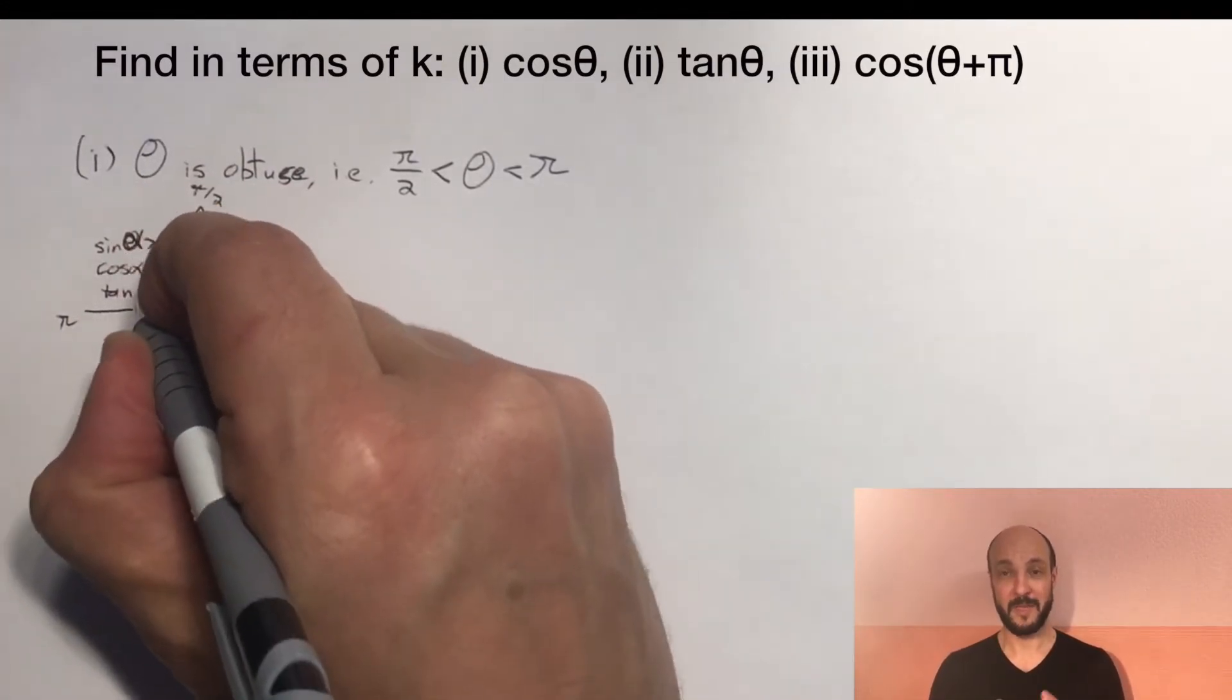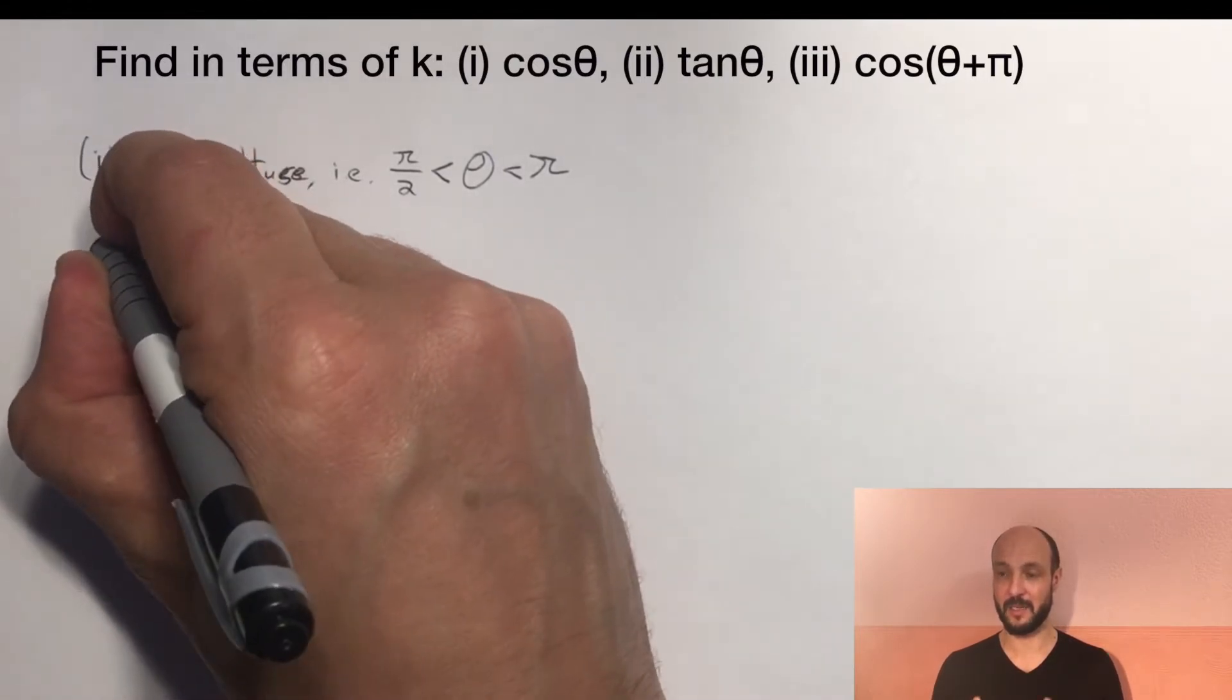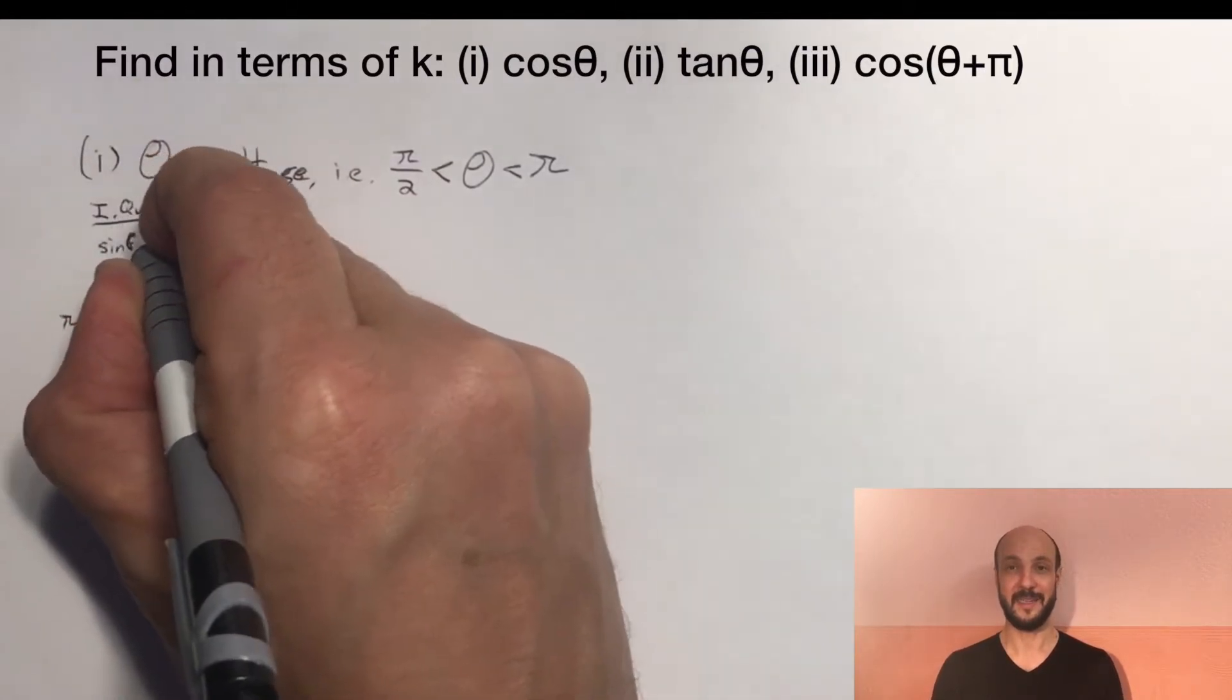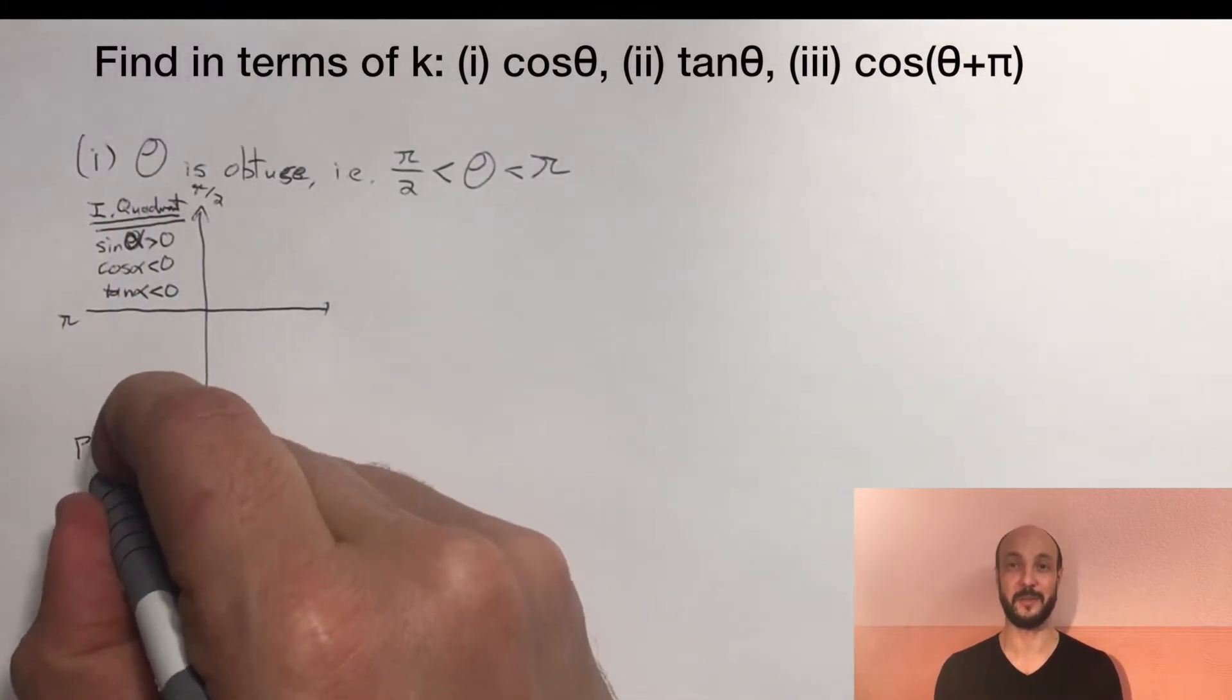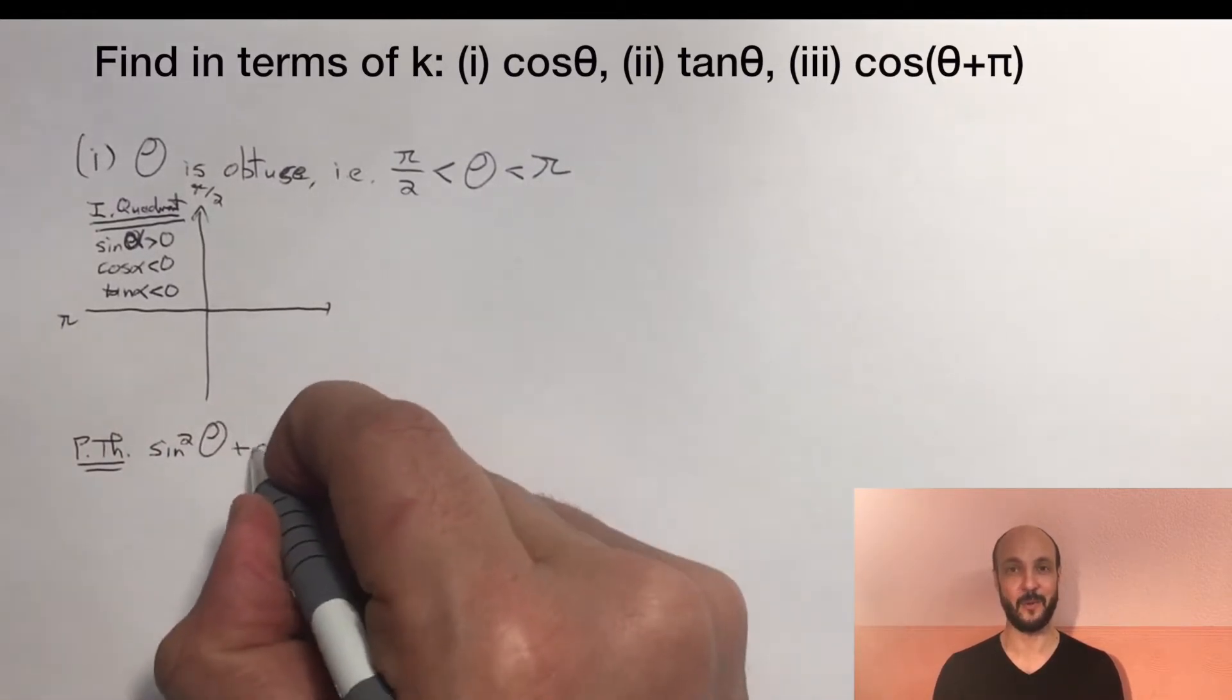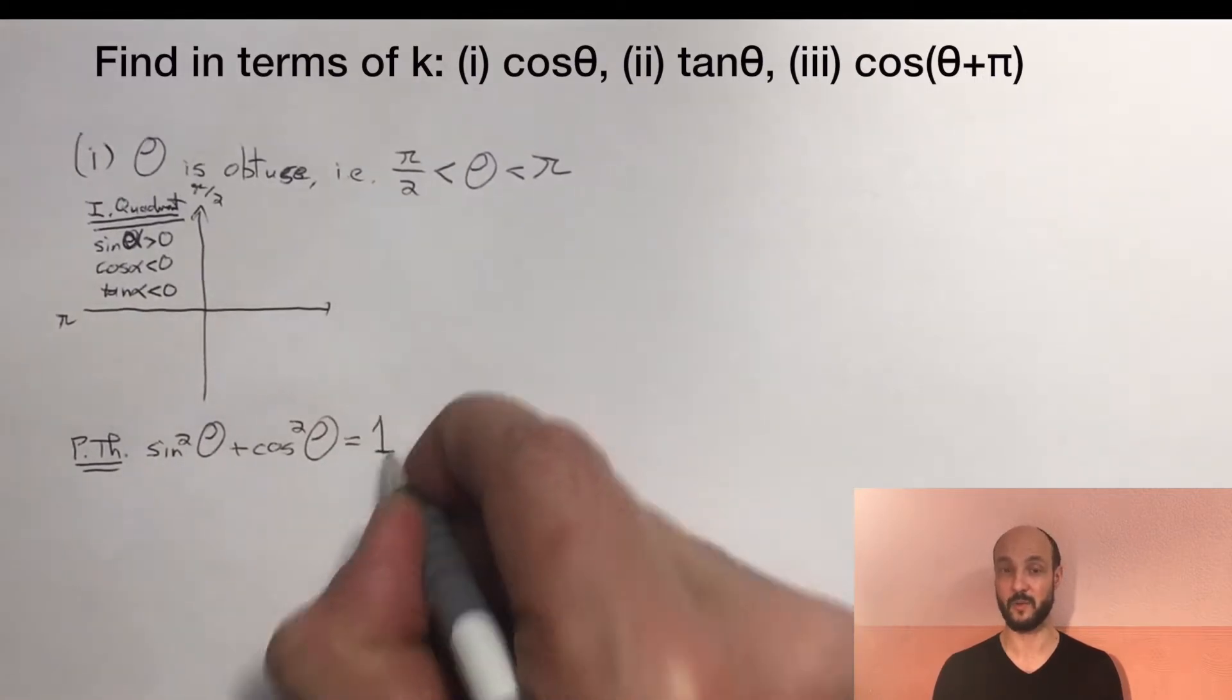Keeping that in mind, we've been given sine theta equals k and we're asking about cosine theta. Now whenever we relate sine theta to cosine theta, the expectation is we're going to be using Pythagoras' rule. And Pythagoras' rule in its trigonometric form is that sine squared of theta plus cosine squared of theta is equal to 1.